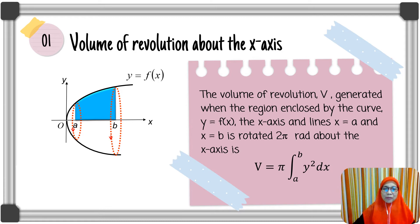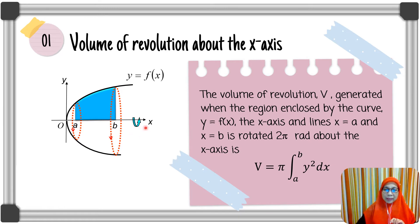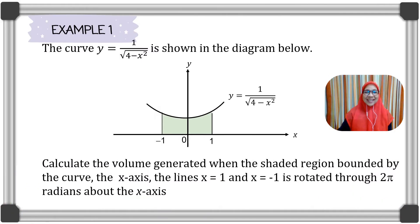Let's look at the volume of revolution about the x-axis. The volume generated when the region enclosed by the curve y = f(x), the x-axis, and the lines x = a and x = b is given by V = π times the integral of y squared with respect to x from x = a to x = b. When it's rotated about the x-axis, we integrate with respect to x. Here is the first example on how to use the formula to find the volume of revolution when it's rotated about the x-axis.